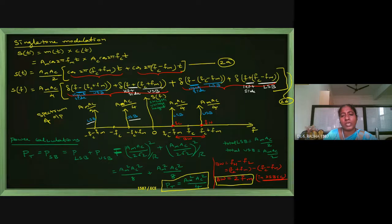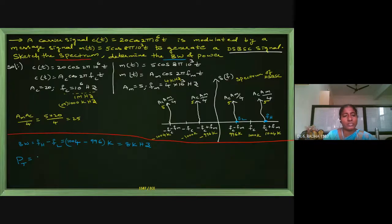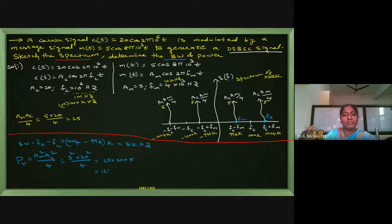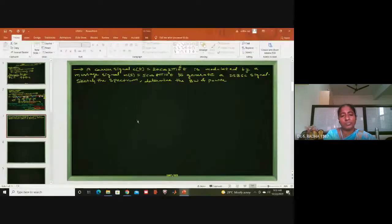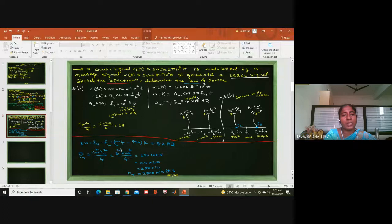For total power in DSB-SC, the formula is Am²·Ac²/4. With Am = 5 and Ac = 20: total power = 5²×20²/4 = 25×400/4 = 25×100 = 2500 watts. That is the total power for the given DSB-SC problem. We have now calculated the bandwidth and power and drawn the spectrum.